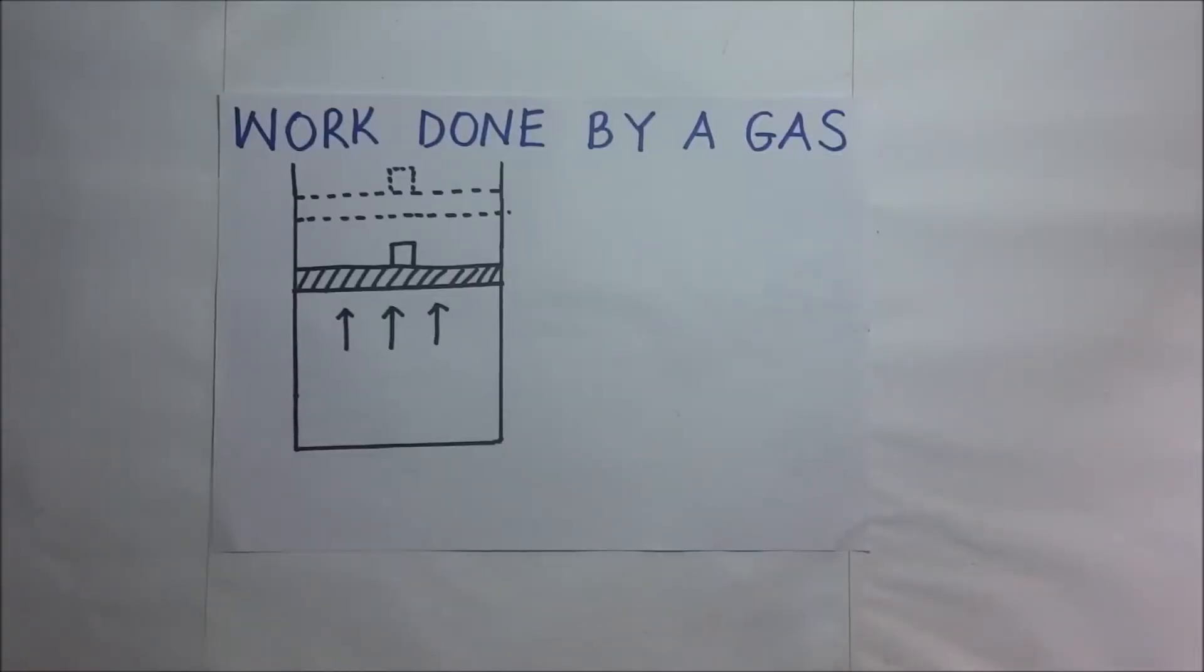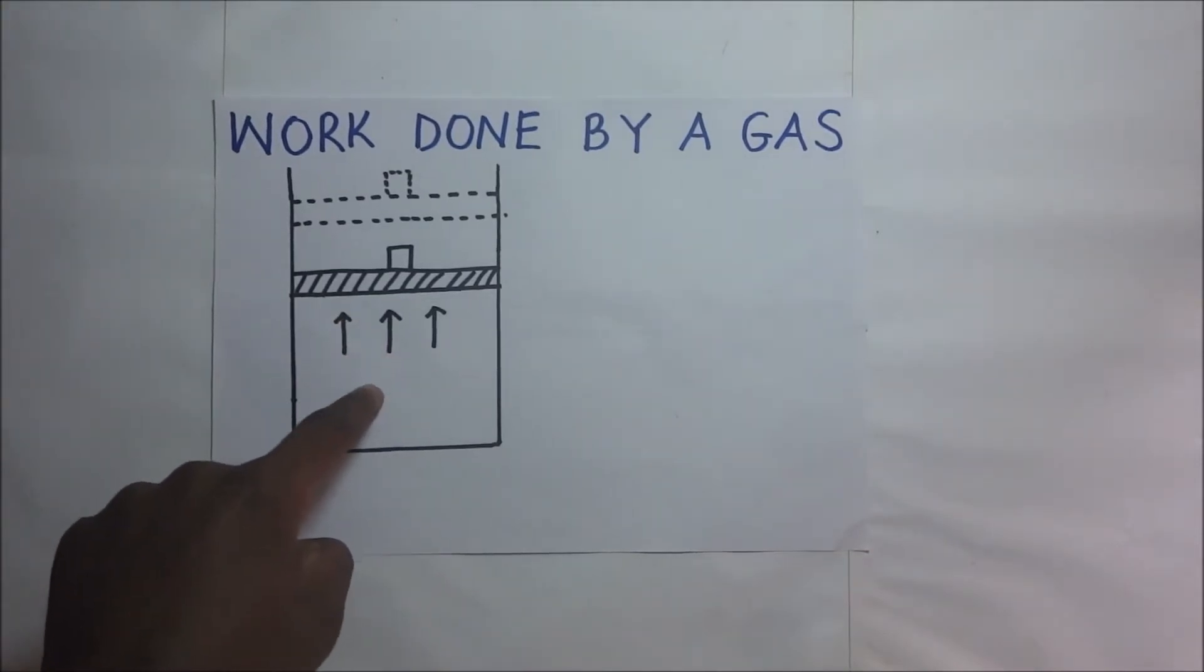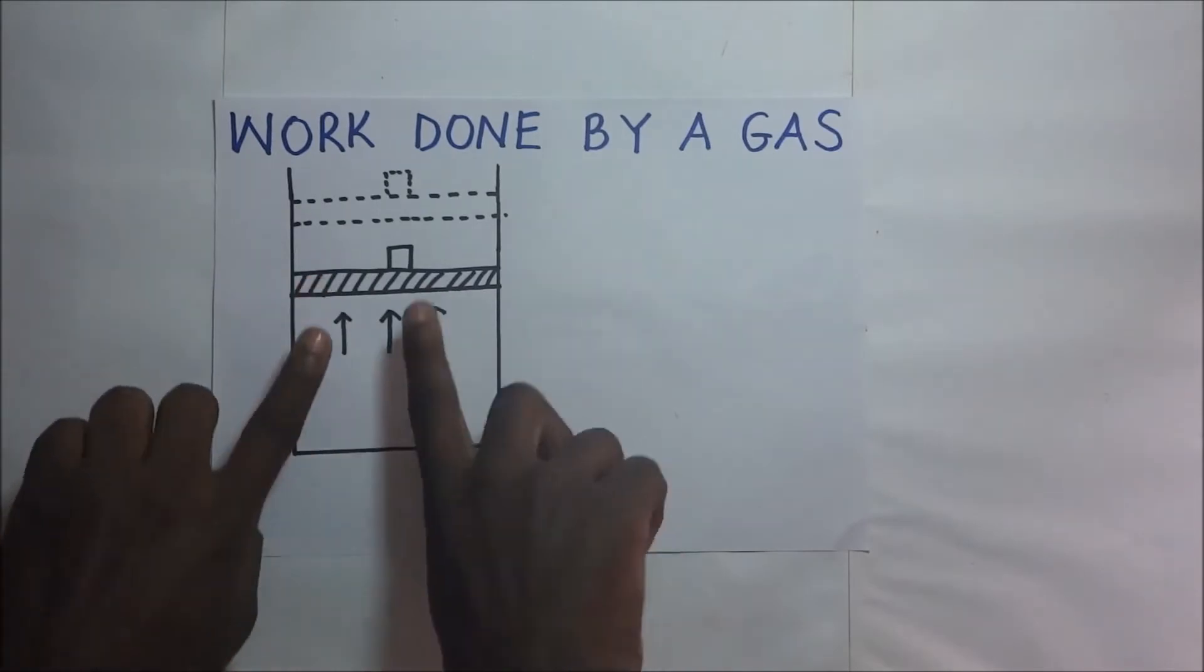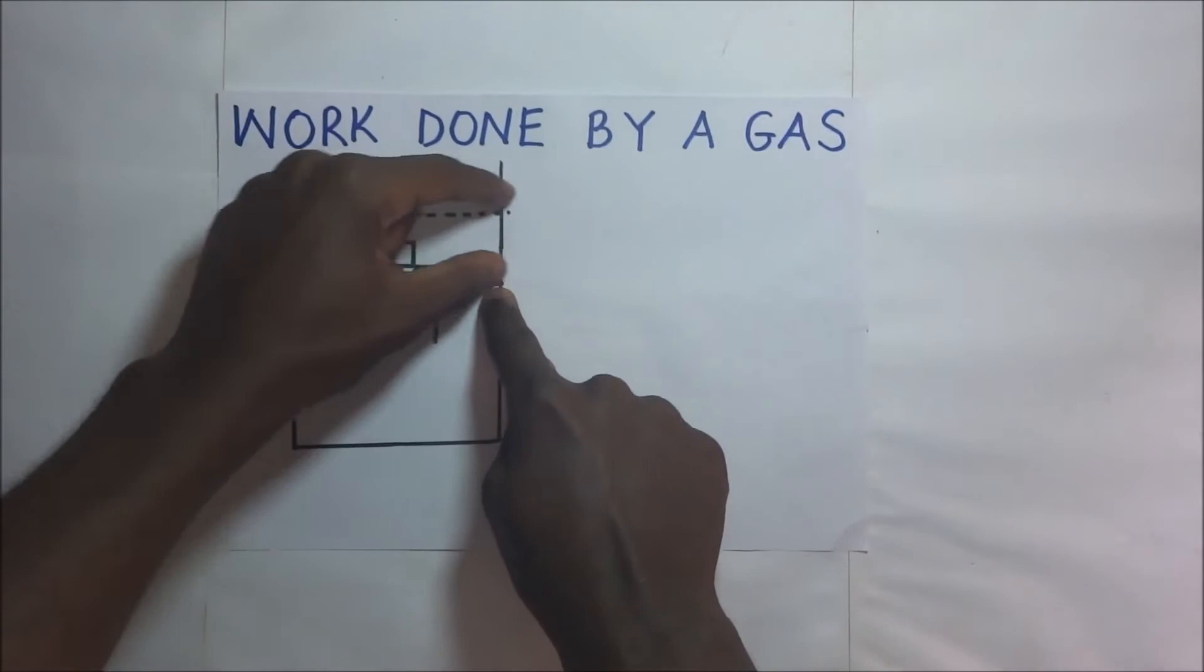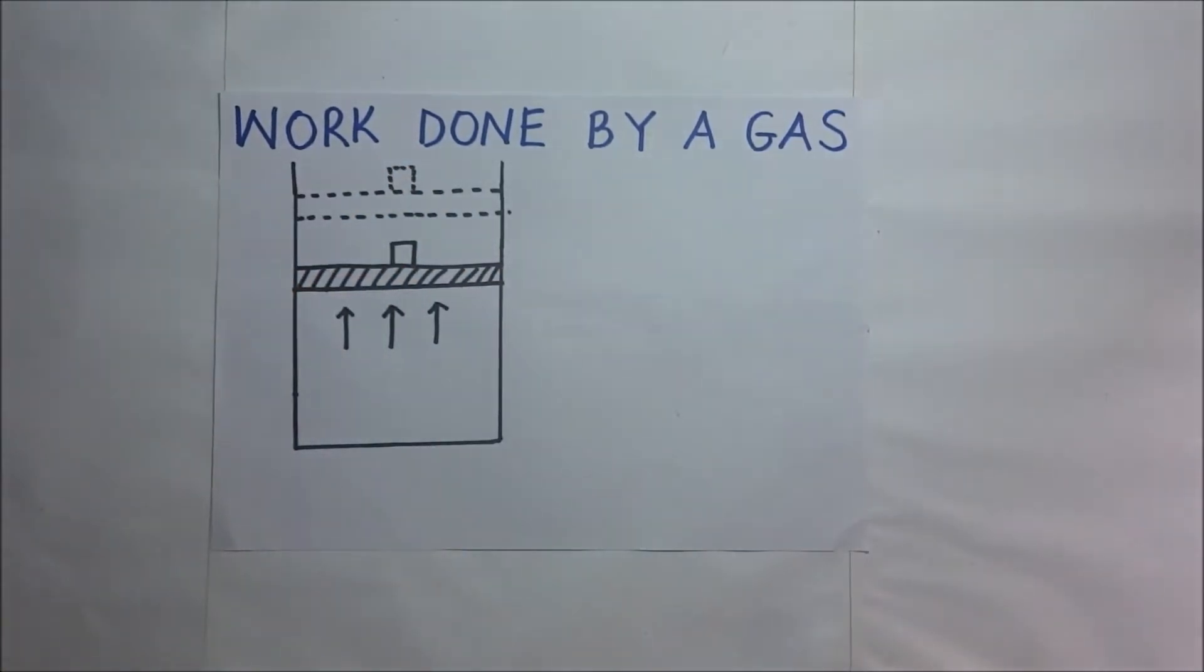Let's consider the diagram on your screen. Suppose this gas in this container expands and pushes this piston up. If it's to push that piston up, it means it's going to push it through a very small distance. Let's call that distance a small change in X, ΔX or delta X.